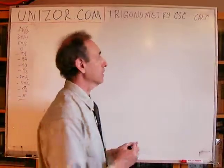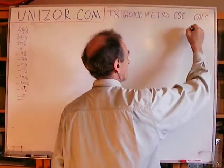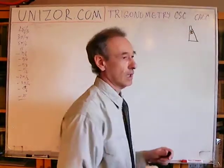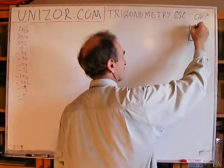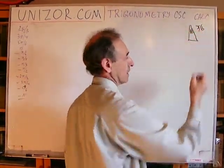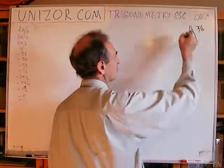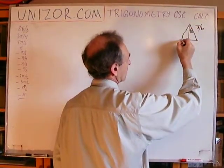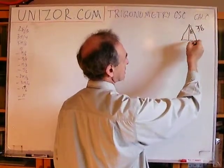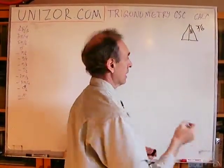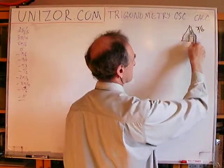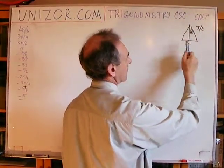If you have an angle of 30 degrees, or pi over 6 in radians, then the opposite catheter is equal to half of the hypotenuse. It's very easy to prove — just construct the triangle symmetrically. You will have 60, 60, and 60 degrees, so it's an equilateral triangle, which means this side equals this side, and this is double the catheter.